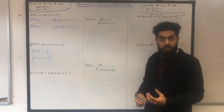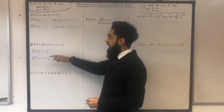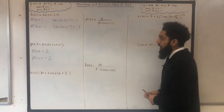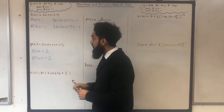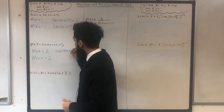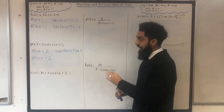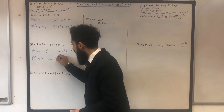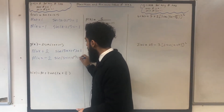In the exam, I could be asked to work out the smallest positive value of x for which the function g of x has a maximum (in this case 2) and a minimum (in this case minus 2). To find the smallest positive value of x for which g of x has a maximum of 2, I need to solve sine in bracket 3x plus 10 degrees equal to 1. For the minimum of minus 2, I need to solve sine in bracket 3x plus 10 degrees equal to minus 1.